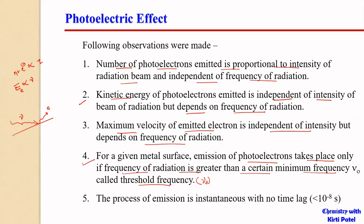This minimum amount of frequency required for emission of an electron is called the threshold frequency, denoted as ν₀. Also, the process of emission of electrons was found to be instantaneous — there was no time lag. There is no time lag between the incidence of radiation and the emission of electrons. Hence, the process of emission is an instantaneous process. These were the five observations made during the photoelectric effect.